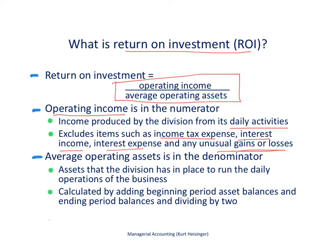In the denominator, we're looking at average operating assets — the assets that the division has in place that are needed to run the daily operations of the business. We're not talking about investments in other companies; we're talking about assets used in our own company's daily operations. For example, if I'm Home Depot, I have forklifts within my stores — that's a long-term asset used in daily operations. We calculate it by adding the beginning period asset balances and the ending period balances, then dividing by 2 to get the average for that period.